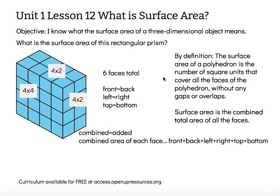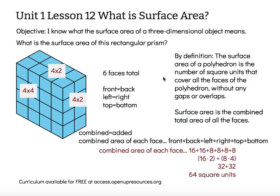Our top is also four by two, and our bottom would also be four by two. When we look at the combined area, we're going to add up the area of all those faces. So we have the front and back, which are 16 square units each; the left and right, which are eight each; and the top and bottom, which are eight each.